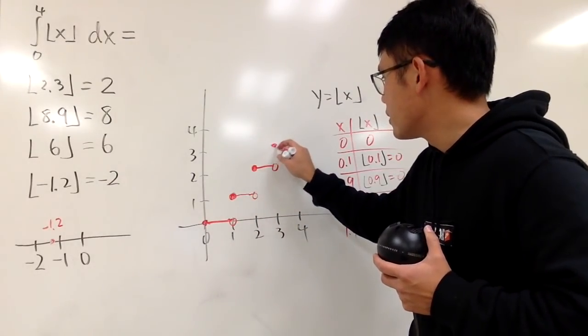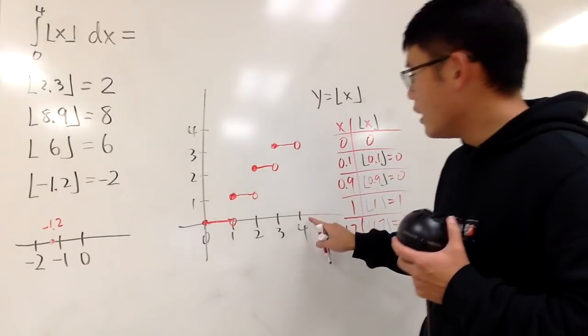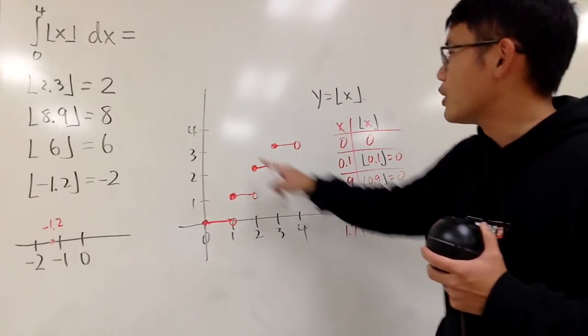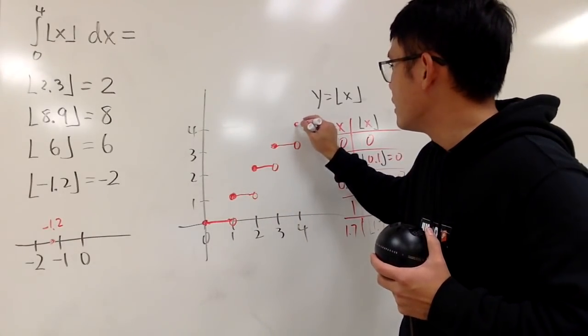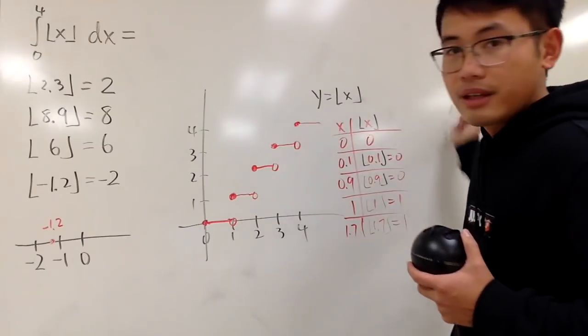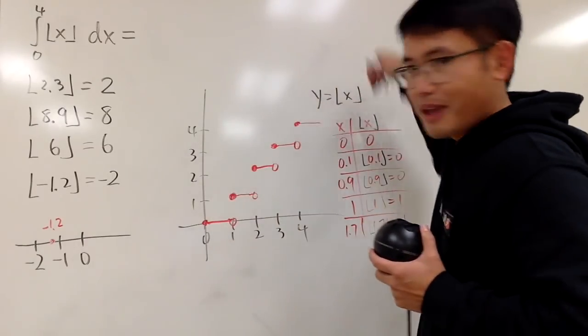And when you have 3, it's a closed circle, and then you have this. And when x is 4, you jump to 4, and this is a closed circle, and then of course you can continue. And it's pretty much like a staircase. Now, the best part is here.